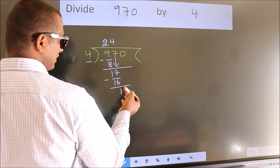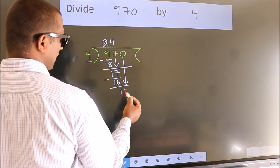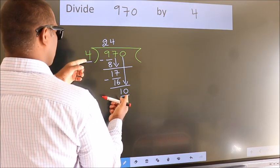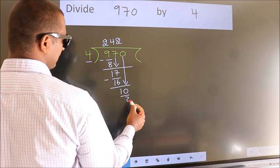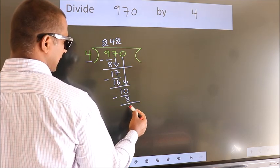After this, bring down the beside number. So 0 down. So 10. A number close to 10 in 4 table is 4 2s 8. Now we subtract. We get 2.